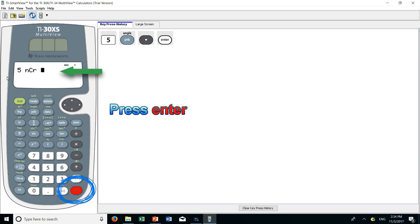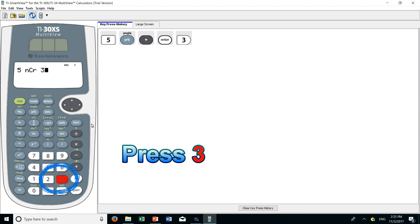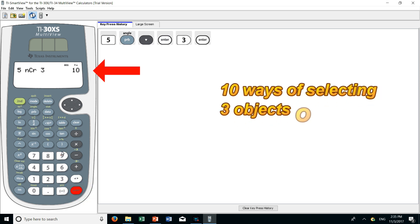And now you can see on the screen five, nCr, and then the blinking cursor. Now the blinking cursor is waiting for you to enter or to key in the value of r, that is the sample size, or the number of objects you're selecting out of a total of five. We are selecting three out of five, so key in the number three. And you can see it here on the screen, but to get the answer you have to press enter. And there we have it, the answer is ten. There are ten possible ways of taking three objects out of five.